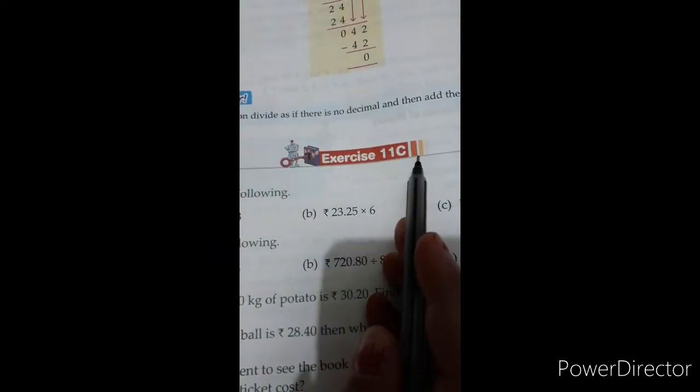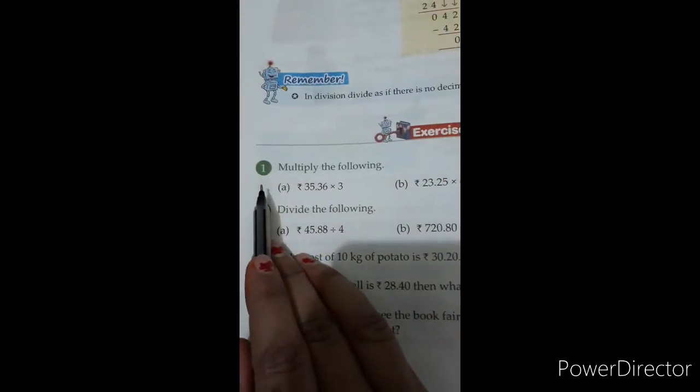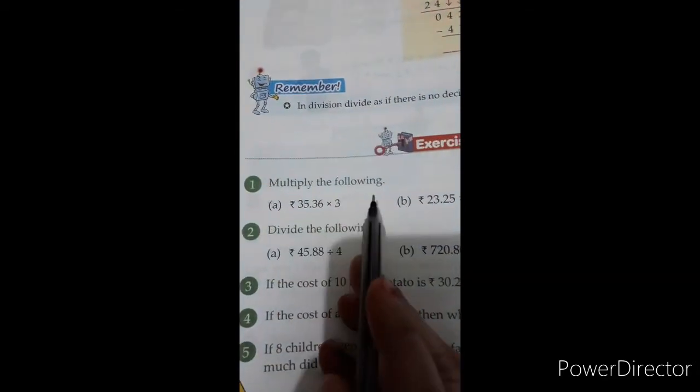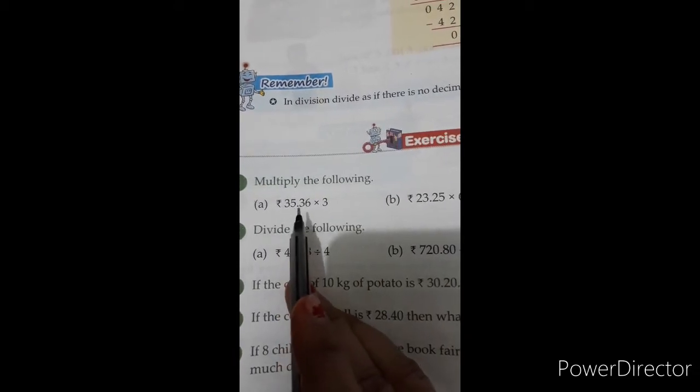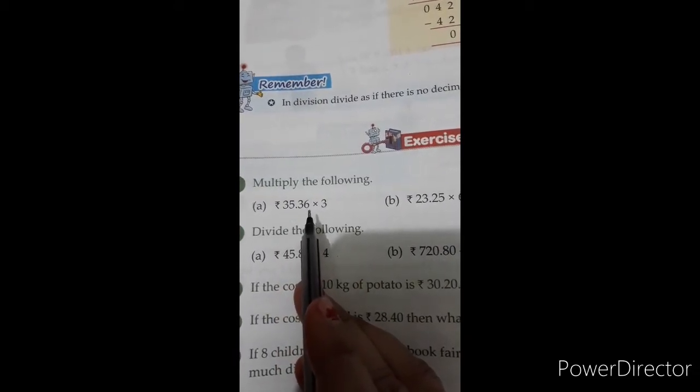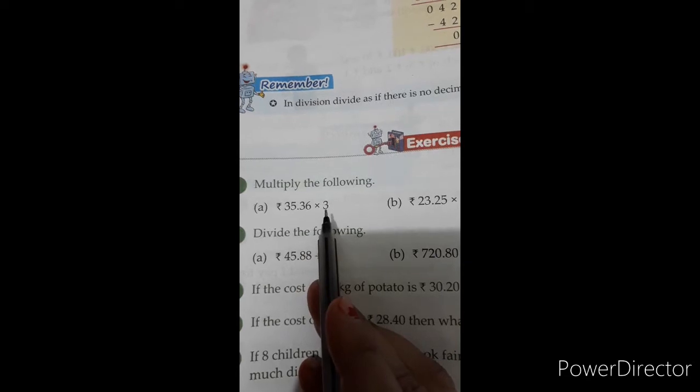Exercise 11c, question number 1, multiply the following. A, rupees 35 and 36 paise multiply by 3.